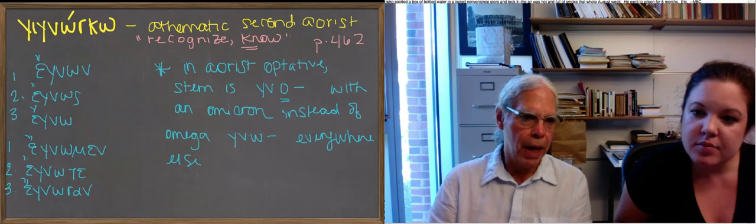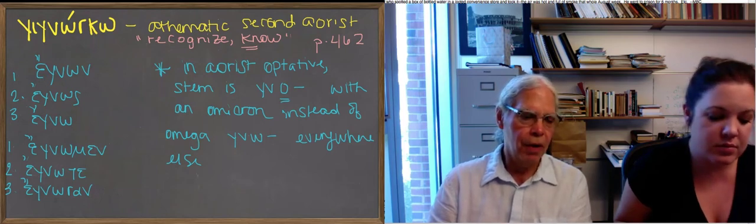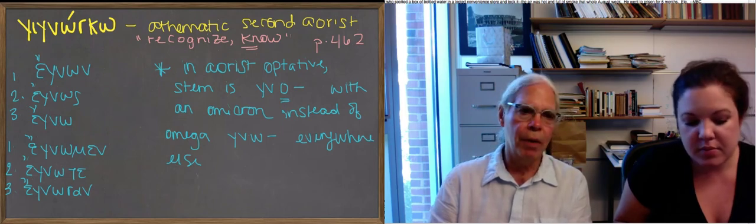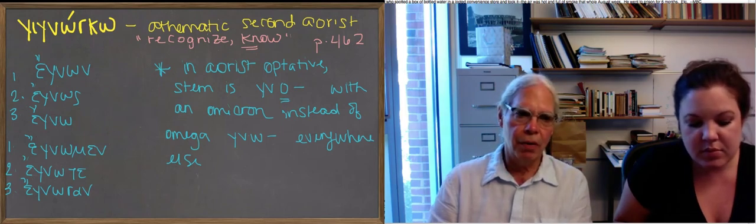is that you've got your augment, e. You've got the stem, or the root, gno. And then you have the secondary endings of an athematic verb, egnon, egnos, egno.